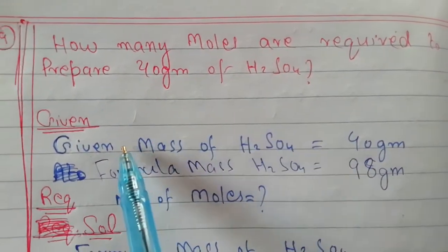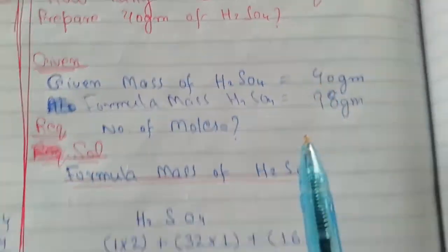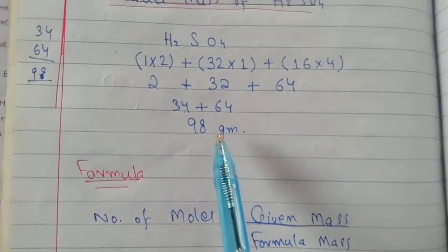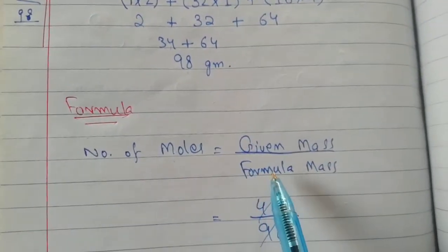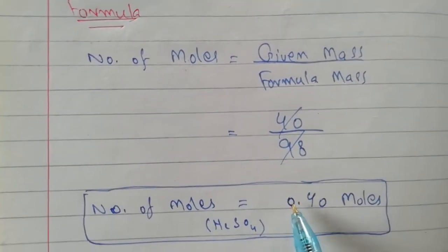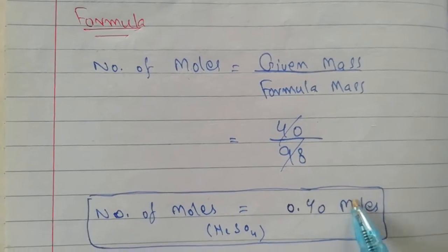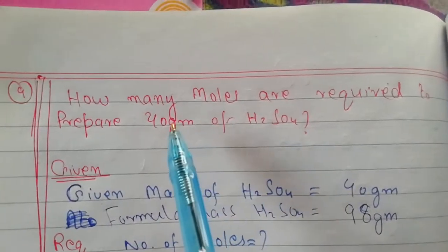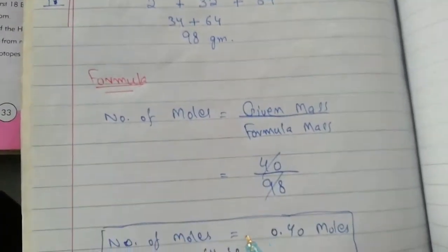Given mass of sulfuric acid is 40 grams, formula mass of sulfuric acid is 98 grams. So in denominator we have formula mass of 98 grams. When we divide it, we get 0.40 moles. So students, this is the number of moles.